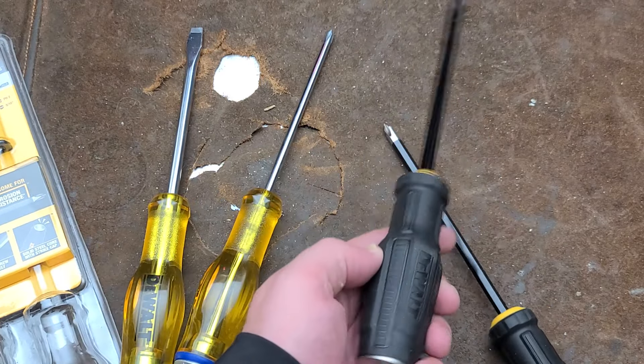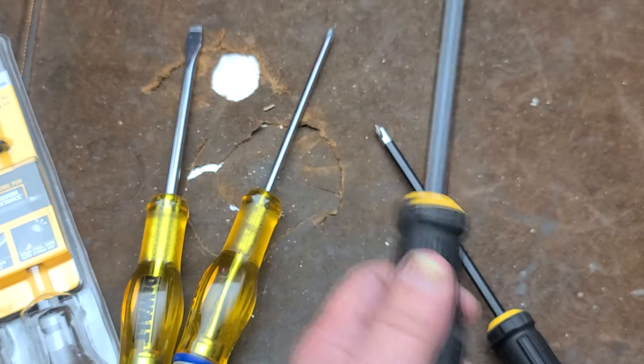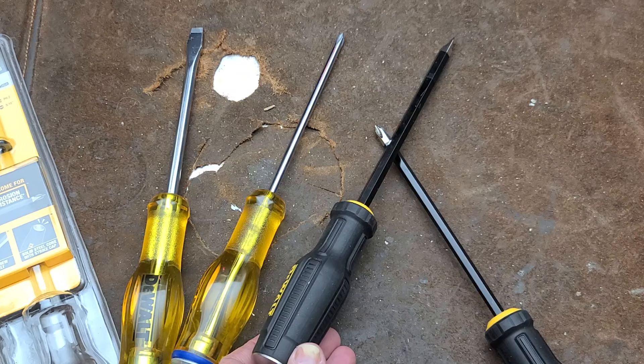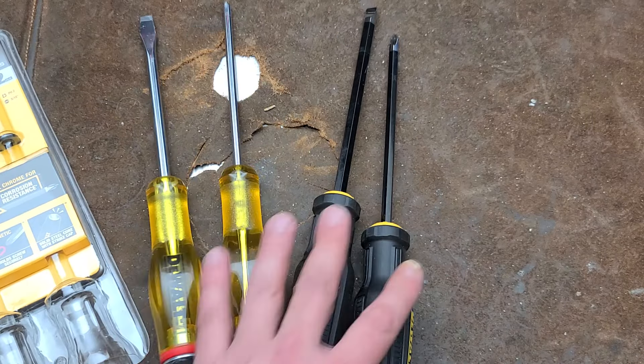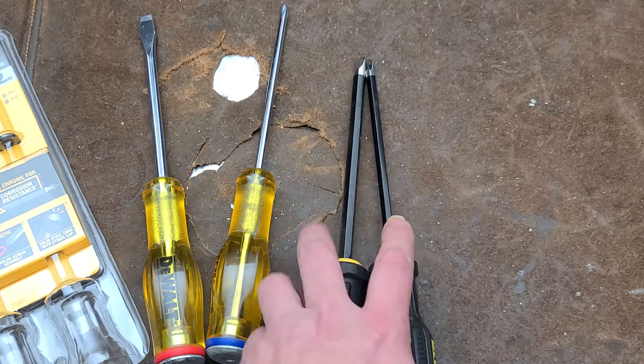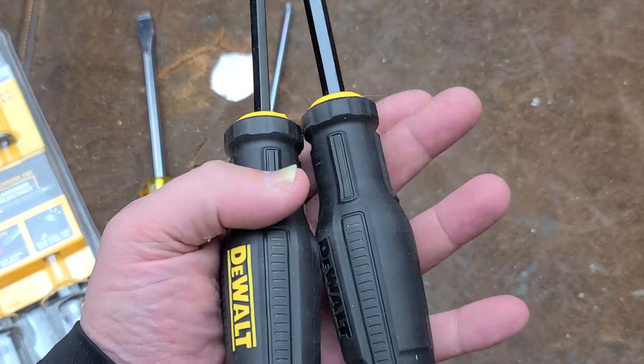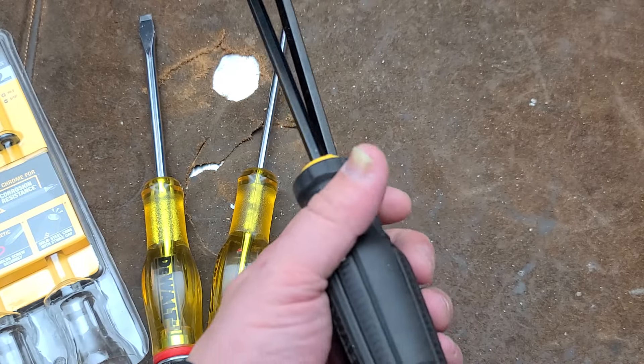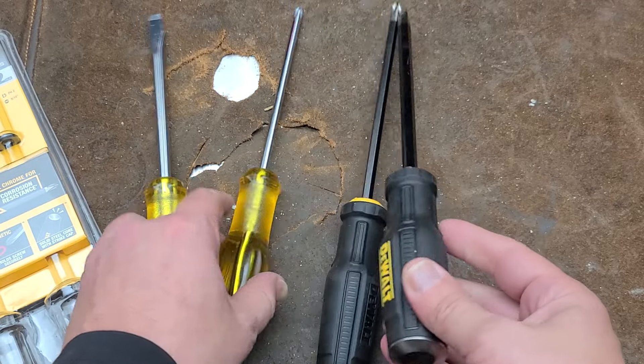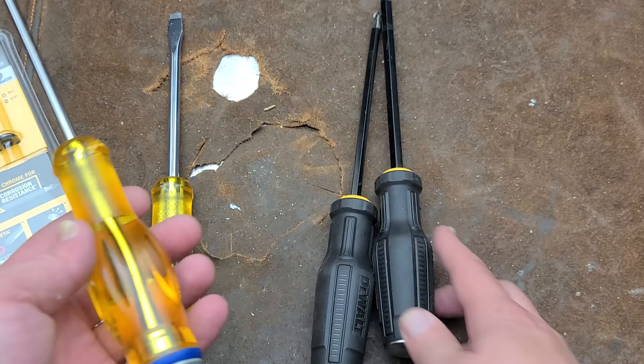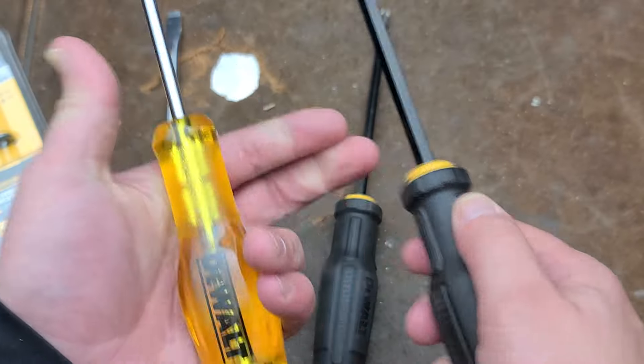So those are, I guess, DeWalt's second generation demolition screwdrivers. The handles are certainly comfy. I don't know. I would think that the shafts are going to be pretty close to the same strength, although they may be a little stronger than the newer ones. They were like 16 bucks on the shelf, so $8 a screwdriver. But I think they went backwards a little bit on the handles once again. They're a little nice, but they should have had them just more squared off and giving you just a bit more grip to work with.